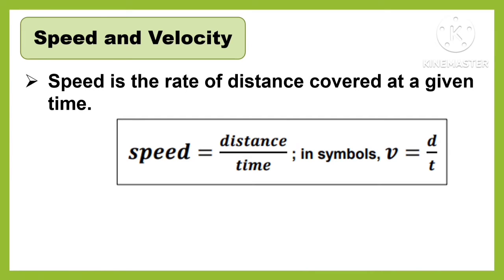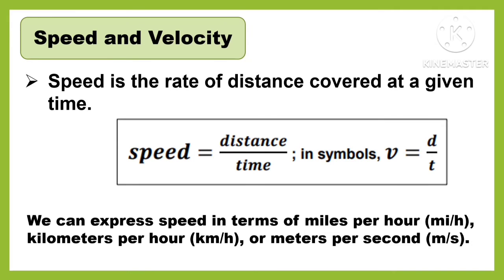The formula of speed is equal to distance divided by time, or in symbols, V is equal to D divided by T. We can express speed in terms of miles per hour, kilometers per hour, or meters per second.